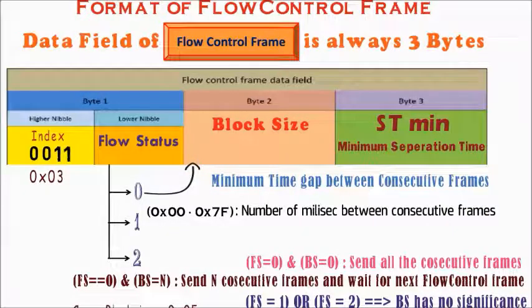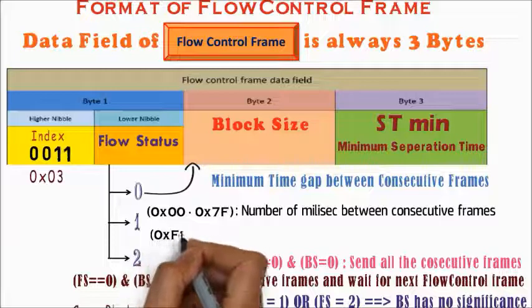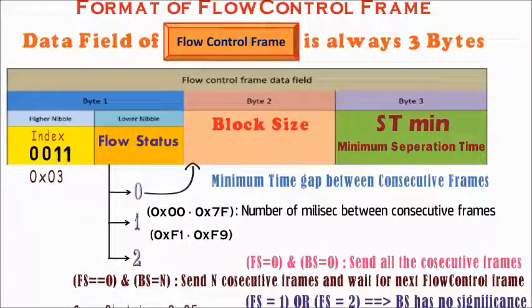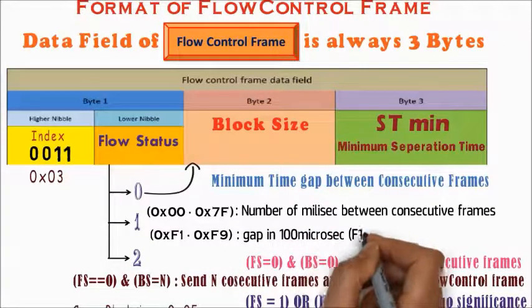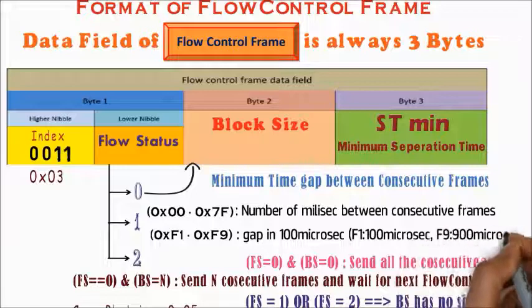While values in the range 241, which is hexadecimal F1 to 249, which is hexadecimal F9, specifies delays increasing from 100 to 900 microseconds.